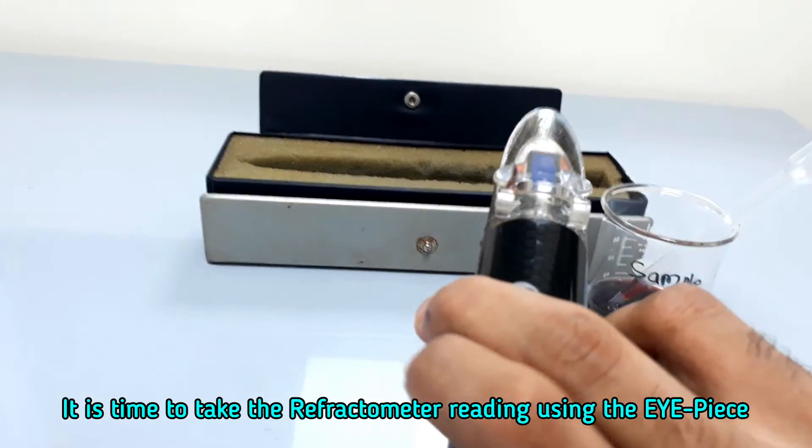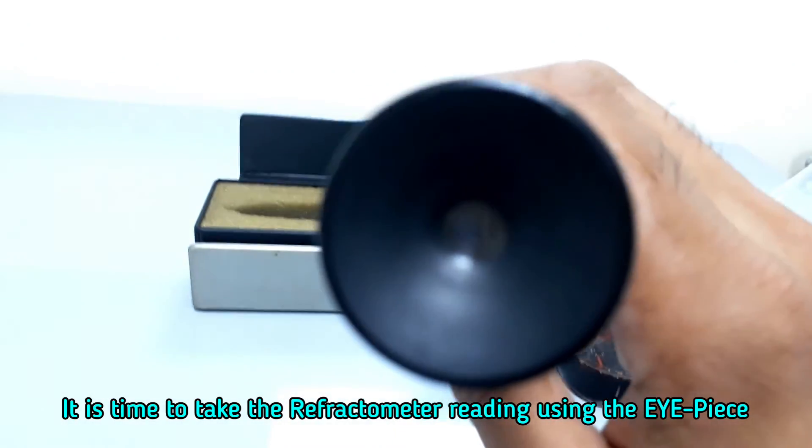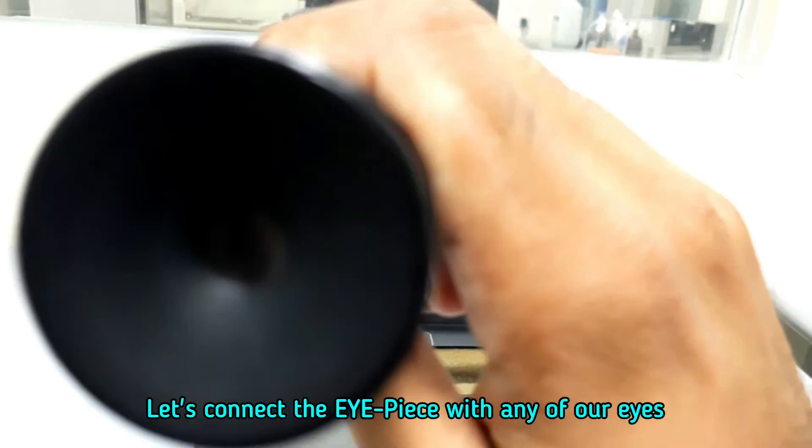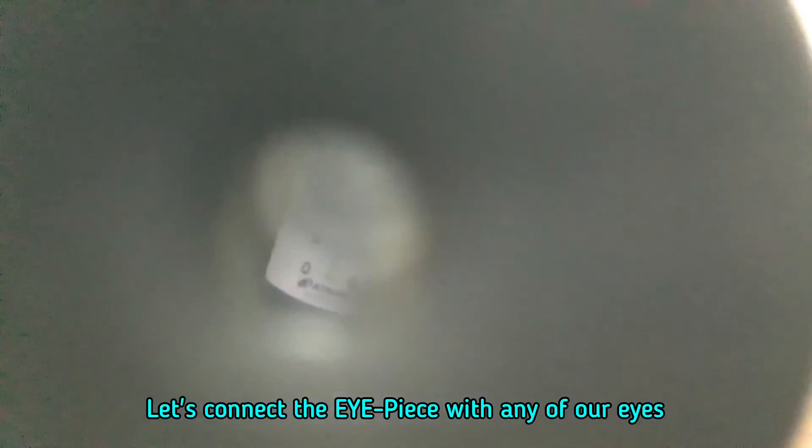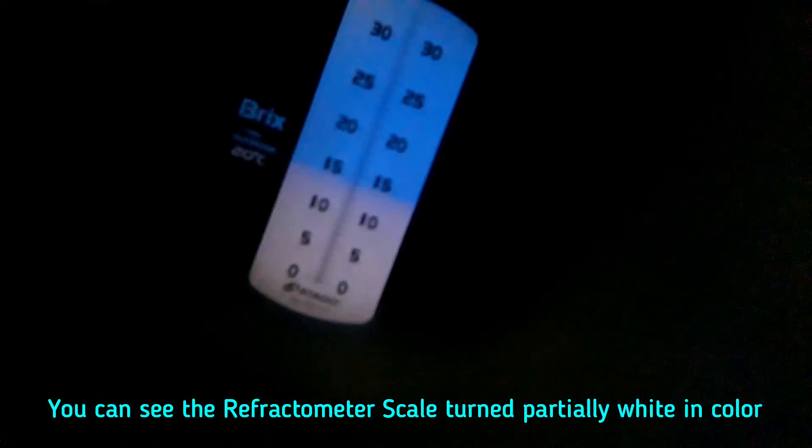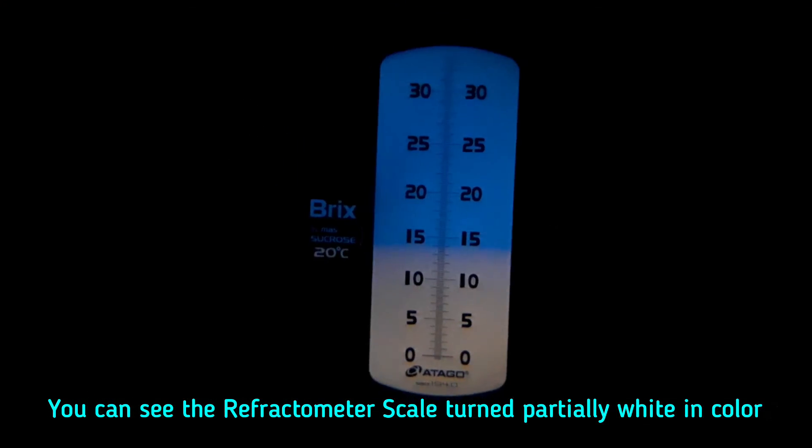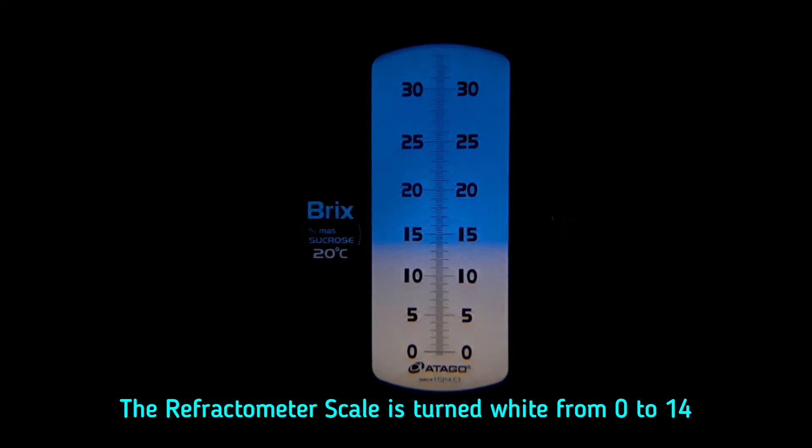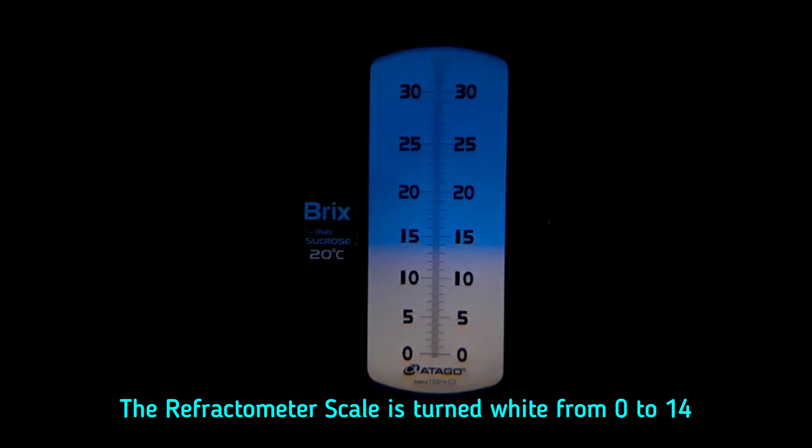It is time to take the refractometer reading using the eyepiece. You can see the refractometer scale turned partially white in color. The refractometer scale is turned white from 0 to 14.